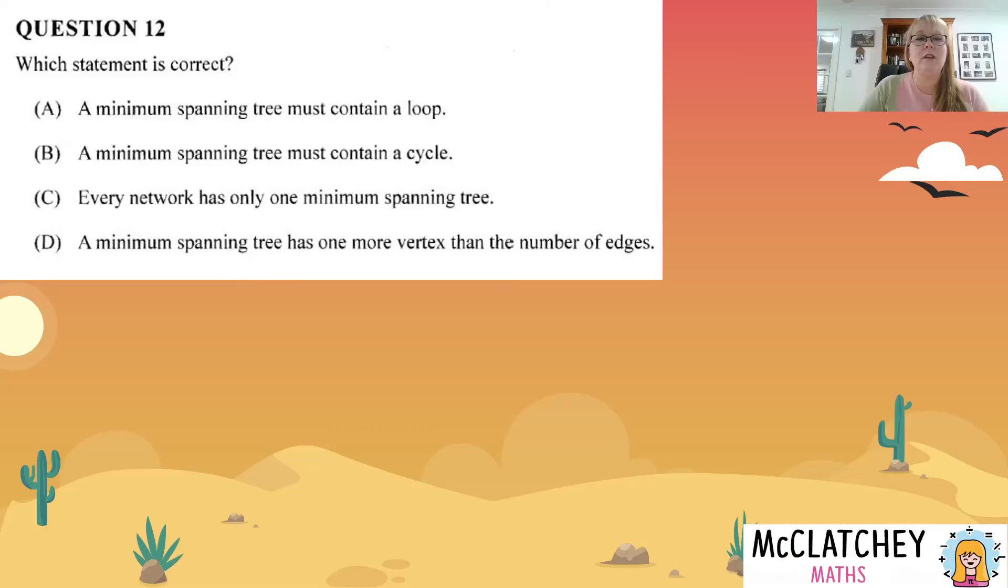Okay. Here's our last question. Question 12, which statement is correct? Now, if you're like me and you see stuff like this and you're in an exam, you're already stressed. That's a bit overwhelming. Whoa, what's going on here? So we need to get our brain switched into gear and think about what do we know about minimum spanning trees? Well, the first thing we know that minimum spanning trees from every vertex is connected to other vertices, but there are no loops and there are no cycles. So we remove any edges that create a loop and we create a cycle. So that knowledge about the minimum spanning tree means we can eliminate A and we can eliminate B.